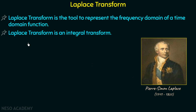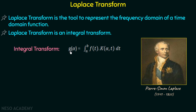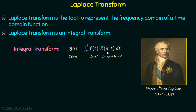The Laplace transform is an integral transform. The general integral transform is given as g(α) equal to the integral from a to b of f(t) multiplied by k(α, t) dt. In this expression, g(α) is the output function of α, f(t) is the input function of t, and k(α, t) is the function of both α and t — that is why we call this function the integral kernel.